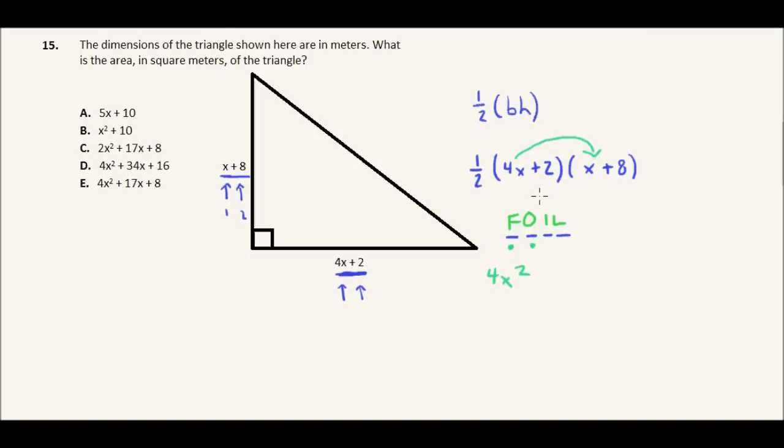Then we do the outside terms, so we've done the first terms, now we do the outside, so that would be 4x times 8. 4x times 8 is plus 32x. And then I'm going to do the inside terms, that's 2 times x, so that's plus 2x, and then I do the last term, so that's 2 times 8, so we get plus 16.